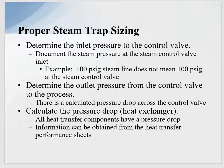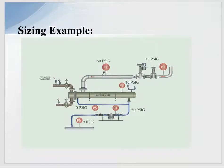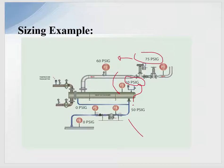Next, determine the outlet pressure from the control valve to the process. There is a calculated pressure drop across the control valve, and also a calculated pressure drop through the heat exchanger. All heat transfer components have a pressure drop; this information can be obtained from the heat transfer performance sheets. Going back to our example, we have 75 PSI to the inlet of the valve — it doesn't mean we have 75 PSI downstream. With a 15 PSI drop across the valve and a 10 PSI drop across the heat exchanger, we end up with 50 PSI on the inlet of the steam trap, or what we call P4.